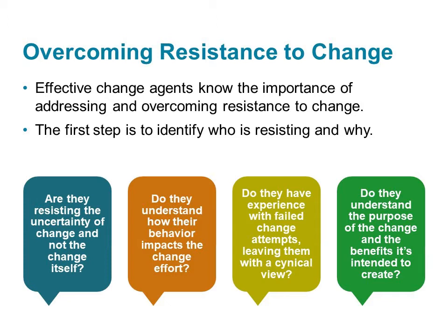In rare situations, we may need to negotiate with resistors to protect their interests and to be able to move forward with the change. For example, a powerful resistor may be asked to join the decision-making group, so long as they encourage their own coalition — their colleagues and friends at work — to also commit to the change. They get to share their input in exchange for support.